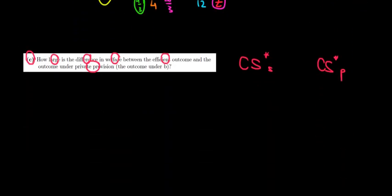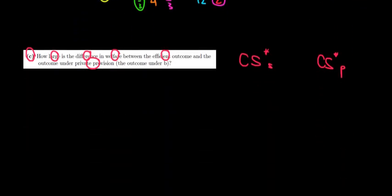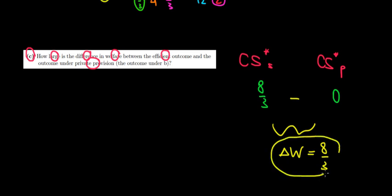So we're literally comparing two outcomes. We're comparing a consumer surplus under social provision of 8 over 3 versus zero. So that's going to be the difference. Eight over three minus zero gives us a difference in welfare equals 8 over 3. And that's going to be our answer. And we are done.